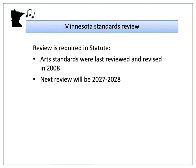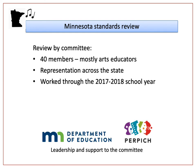Did you know that Minnesota Statute requires that academic standards be reviewed and revised on a cycle? The previous Arts Standards were revised in 2008, and the next revision is likely in 2027-28. The Arts Standards were revised by a committee of about 40 people. This committee was divided into five Arts Area groups, and each Arts Area was made up of mostly Arts Educators, plus an administrator, a community member, a member of higher education, and a parent. Representatives came from all across the state. They met about once a month through the 2017-2018 school year, and each Arts Area developed their own benchmarks.